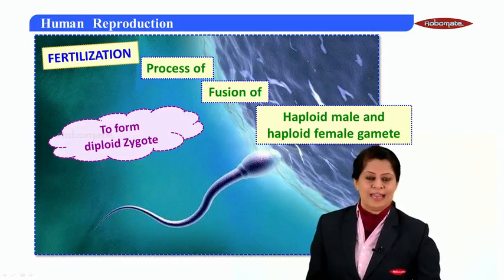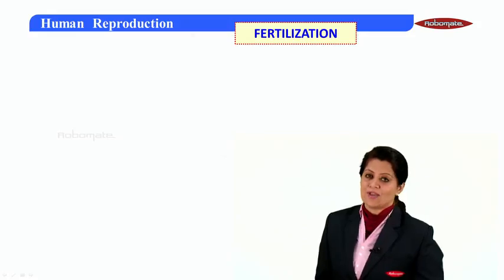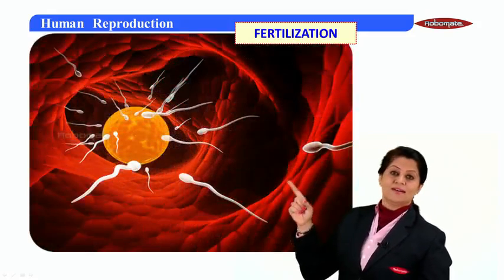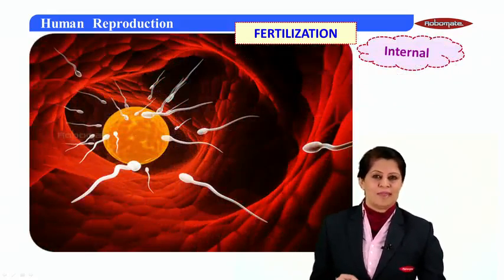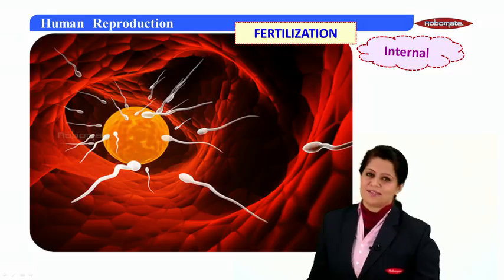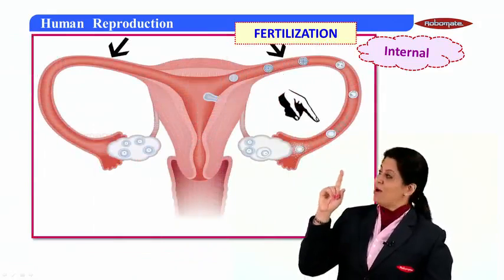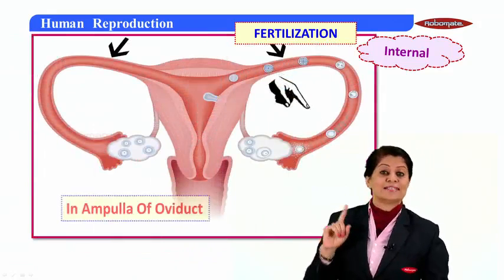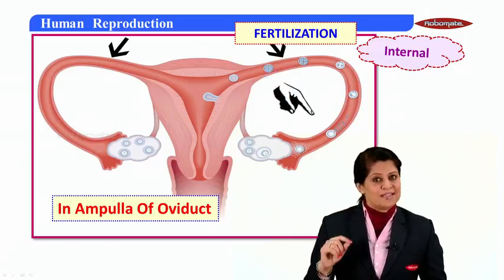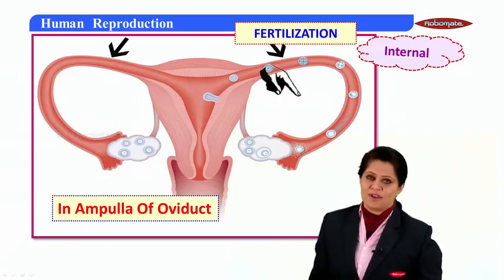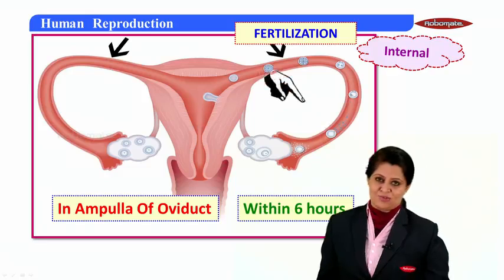Now let's look at the details of fertilization. In humans, fertilization is internal — it takes place inside the body of the female. But where exactly? It takes place in the ampulla of the oviduct, which is the longest section of the oviduct. Fertilization occurs in the ampulla of the oviduct, normally within 6 hours of ovulation.